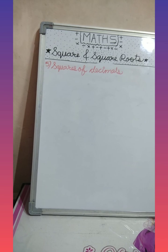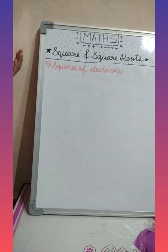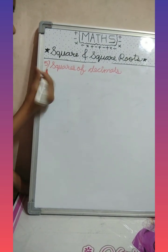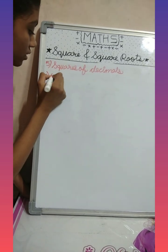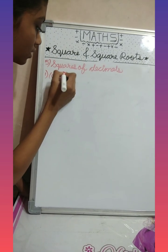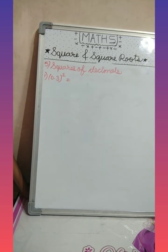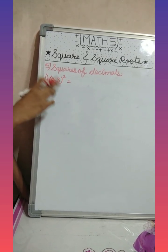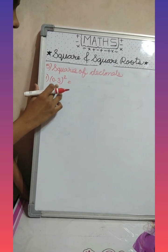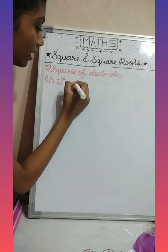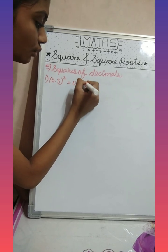So let's see the trick for finding out squares of decimals. First we will take the example zero point three square. In decimals, after point there is one place, so we will double the place. If here is one, here we will write zero point zero nine.